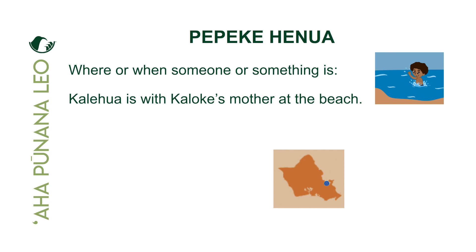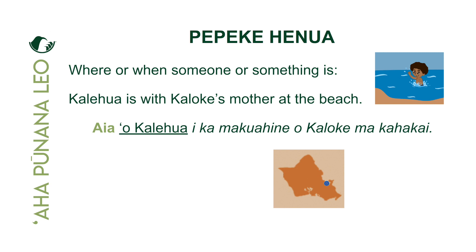Where is Kalehua and the mother of Kaloke located? At the beach — that is our ave. We have two ave in this sentence: with the mother of Kaloke, and at the beach. How do we say at the beach? Ma — you can use 'e' or 'ma' to mean in, on, or at. The beach is kahakai, a special word that doesn't require an article — you can just say ma kahakai. So we have: aia o Kalehua, i ka makuahine o Kaloke, ma kahakai. Pololei — aia o Kalehua, e ka makuahine o Kaloke, ma kahakai.